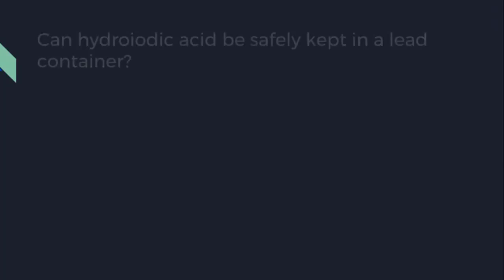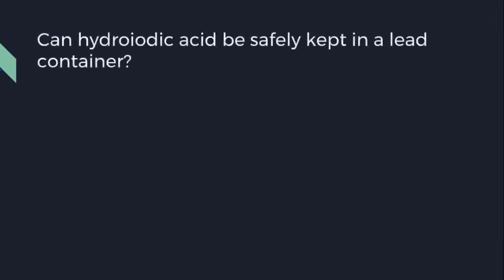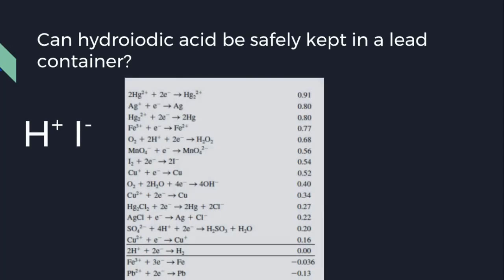Next question. Can hydroiodic acid be safely kept in a lead container? Hydroiodic acid breaks up into hydrogen and iodine, so we look on the reduction table. We can find iodine over here, and hydrogen over here.